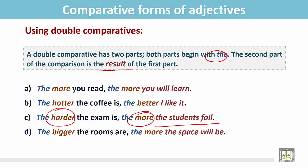The bigger the rooms are, the more the space will be. The double comparatives here. Bigger and more. And the result is that if the rooms are bigger, then there will be more space.